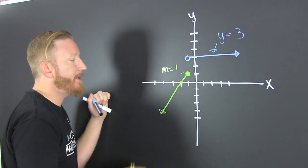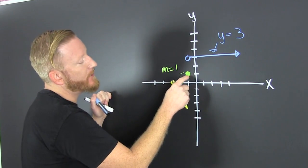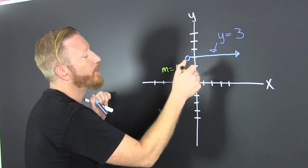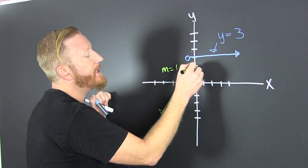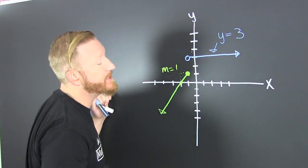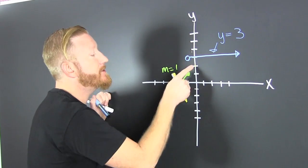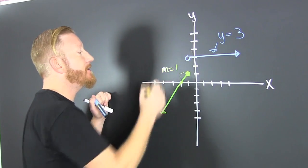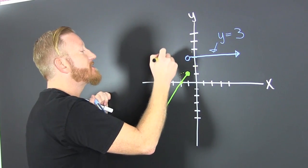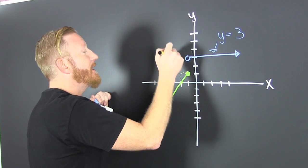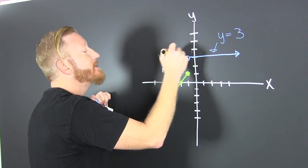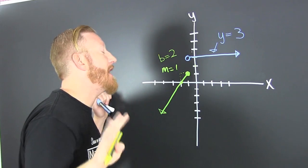And if we continue on that path — up one, over one — our y-intercept is going to be two. So that's our b right there. Our y-intercept is two.